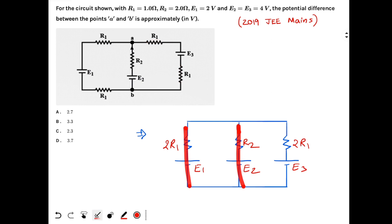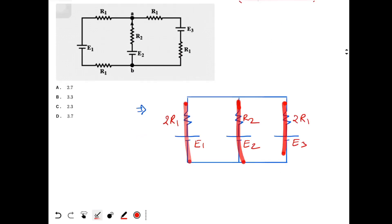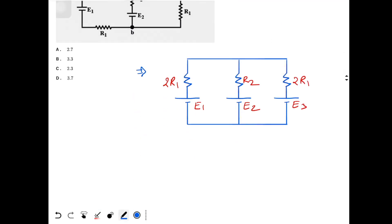Now we have three batteries in parallel. We can combine them - this is a parallel combination of batteries. This is your terminal A, this is the terminal B.